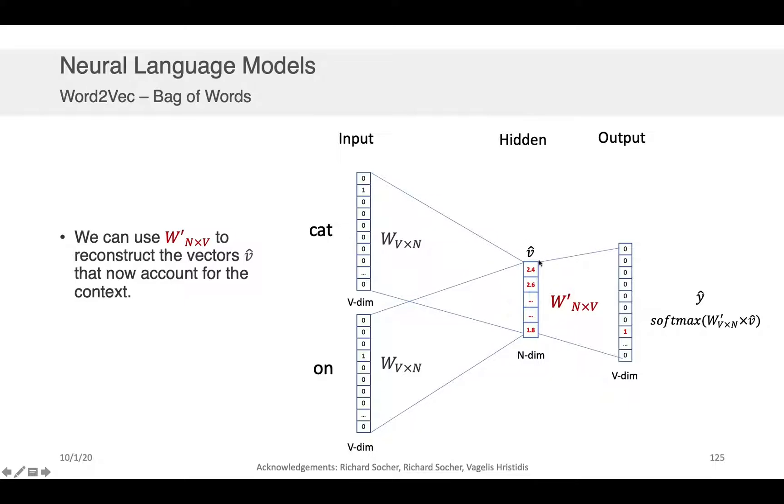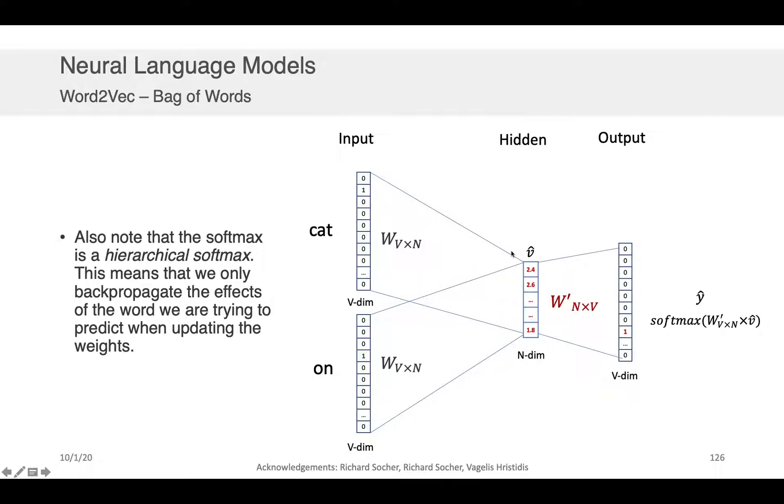Okay, so the last point that I want to make here is that the softmax function that you're seeing here in the Word2Vec implementation is technically a hierarchical softmax. For practical purposes what this means is that you're only back propagating the effects of the word that you're trying to predict when updating the weights. So because there's many different outcome classes here, right, you could imagine that you could for each of these back propagate and update W and W prime. Practically, what you do when you're using hierarchical softmax is you say I'm only going to update the weights for this location because this is the only place it was won.